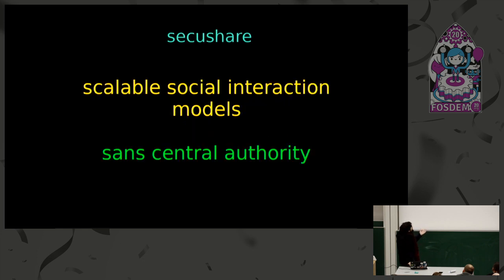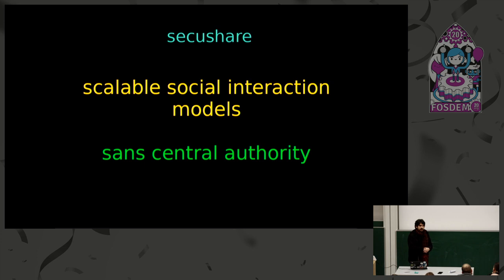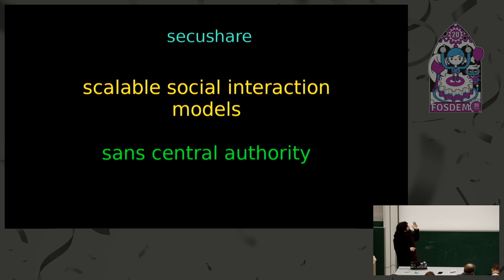SecuShare, which Martin also mentioned, has been a research group for some years in scalable social interaction models. There's been a little bit of implementation but it's mostly been research and documentation. It started as a meta project and then about five years ago decided to focus on building on top of GNUnet. It's a general social interaction model based around concepts of a social graph, a distributive pub-sub system, and multicast distribution. A core point is no central authority in that design.